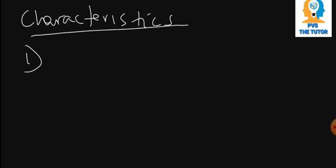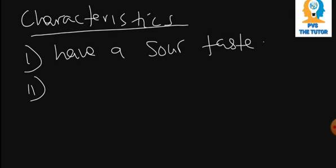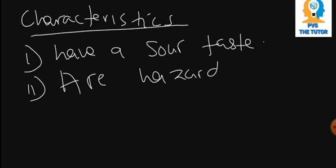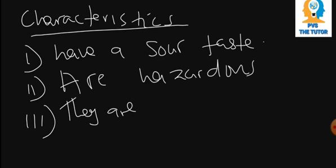Now let's look at characteristics of acids. Number one: acids have a sour taste. Number two: acids are very hazardous in that they cause irritation whenever spilt on your body. They are corrosive and can react with anything they come into contact with. For example, if you spill acid on a piece of cloth, you will find that the cloth has been eaten up.